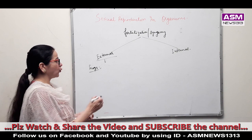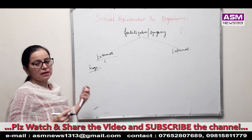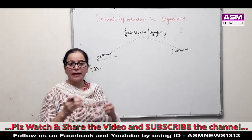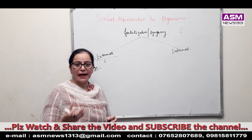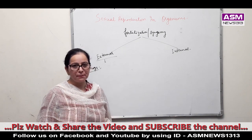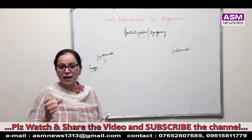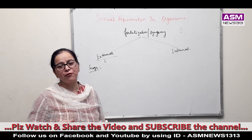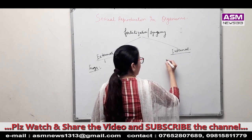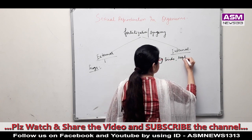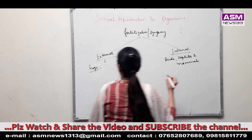This type of fertilization is known as external fertilization. In the case of internal fertilization, the male gamete and the female gamete fuse inside a particular body. For example, in higher organisms like birds, reptiles, and mammals, the male gamete is transferred to the female body and fuses inside the female sex organ, resulting in the formation of the zygote. So in this case the fertilization is internal — examples are birds, reptiles, and mammals.